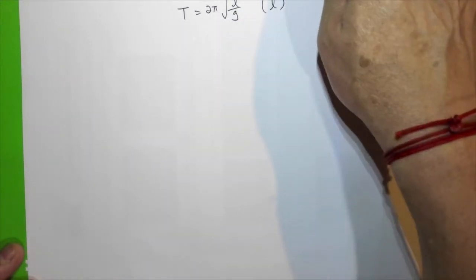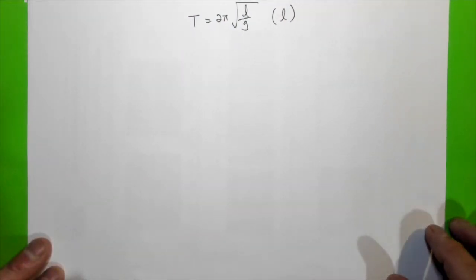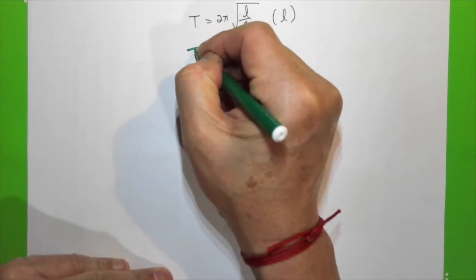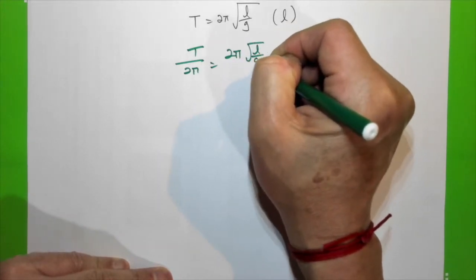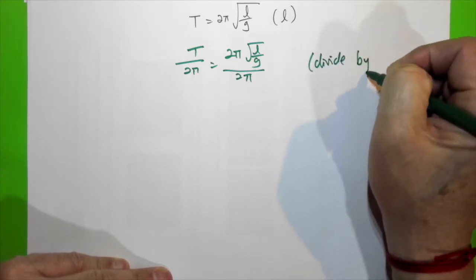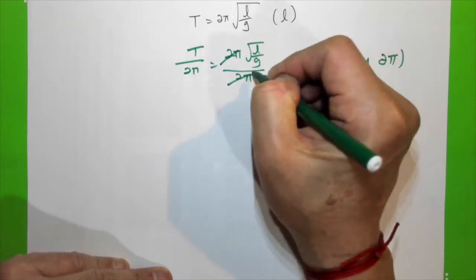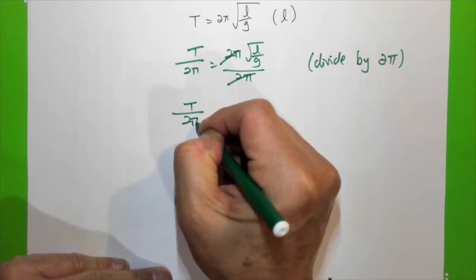Another example: T = 2π√(l/g) and we want l as the subject. First I divide both sides by 2π, so T over 2π equals 2π√(l/g) over 2π. This eliminates 2π from the right-hand side, giving us T over 2π equals √(l/g).